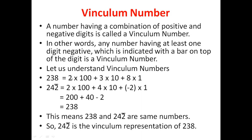Let us understand Vinculum Numbers. Consider the normal number 238. Its expansion is 2×100 + 3×10 + 8×1. Similarly, we expand the Vinculum number 24̄2: 2 is at the hundreds place so 2×100, 4 is at the tens place so 4×10, and bar-2 means minus 2 at the units place. So 240 − 2 = 238. This means 238 and 24̄2 are the same number, so 24̄2 is the Vinculum representation of 238.